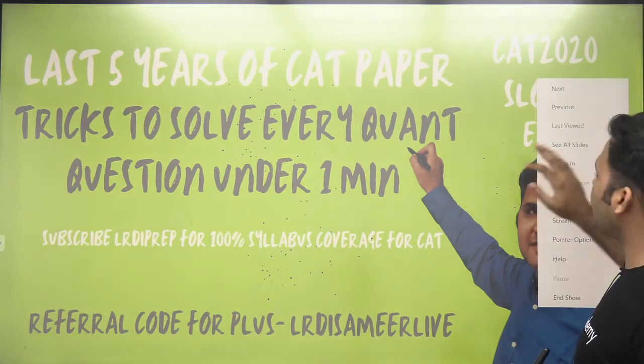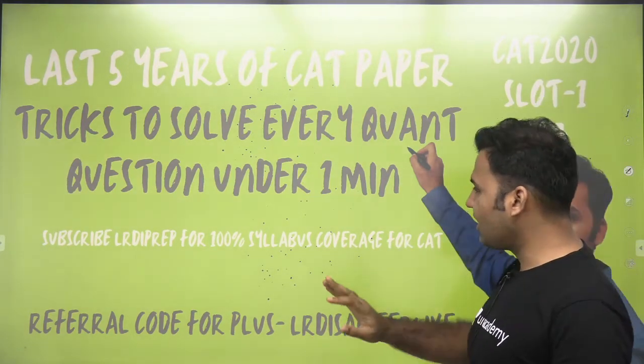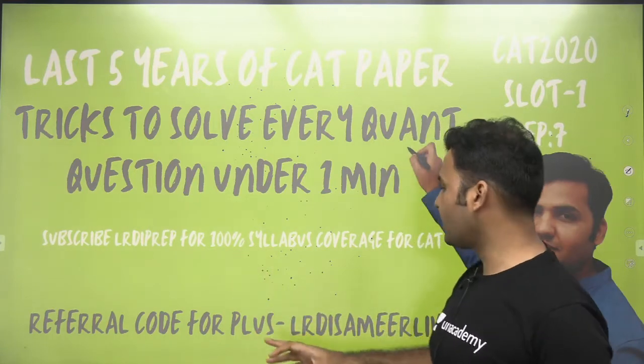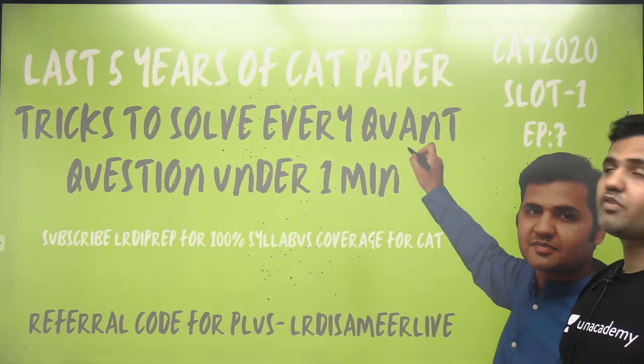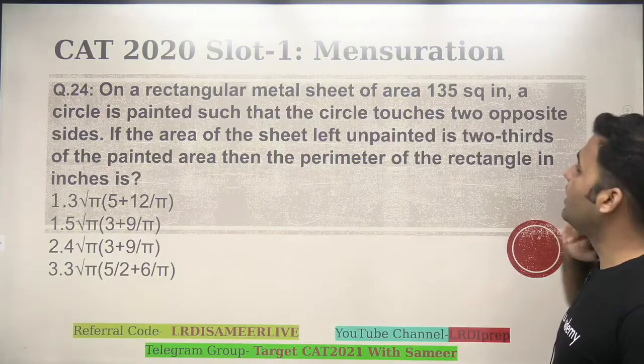Let's have a look at it guys. You can subscribe to LRDA Prep for your 100% syllabus coverage for CAT exam preparation. Also, LRDA Smeer Live is my referral code that you can use to get 10% off on Unacademy Plus subscription. Here is the next question.